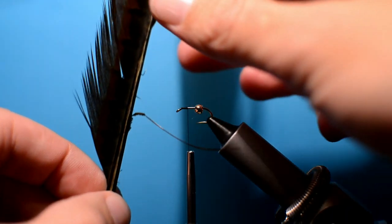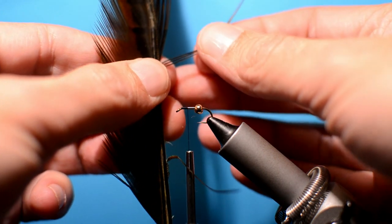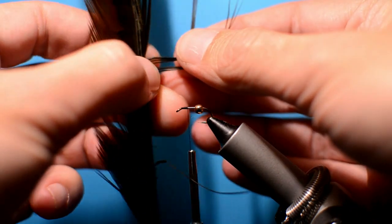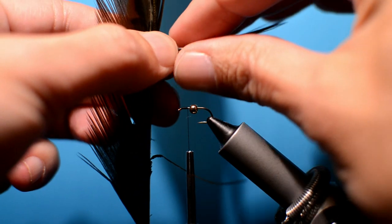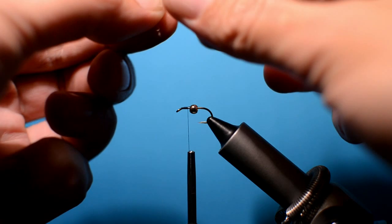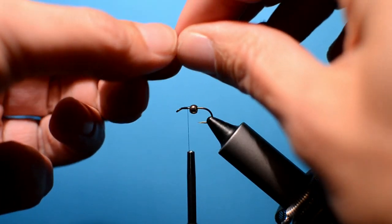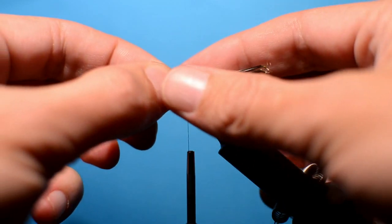Now what we're going to do is take a pheasant tail, just grab four, six fibers, just yank them out. It doesn't have to be too neat. What we want to do is just grab the tips, bring them over, move the bead out of the way.